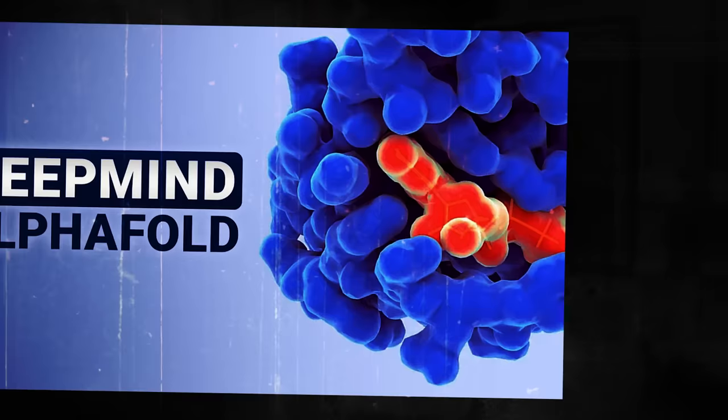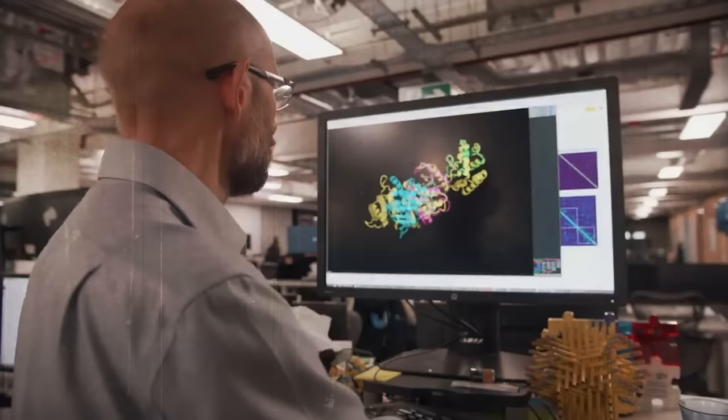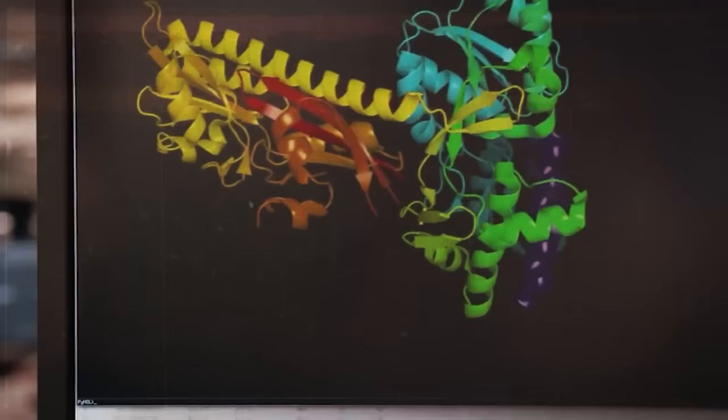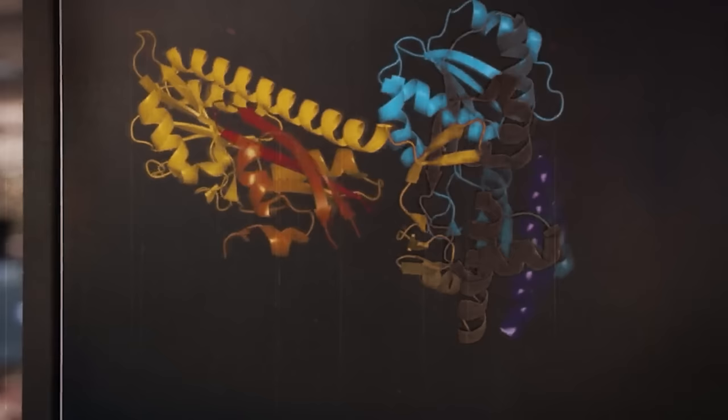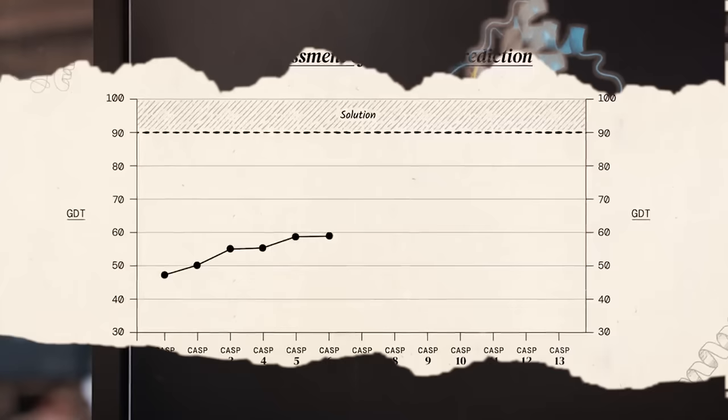AlphaFold is an AI system that can predict the structure of proteins with unprecedented accuracy. AlphaFold used a technique called deep learning, which is a way of teaching an AI to learn from data using multiple layers of artificial neurons. It also used a technique called attention mechanisms, which is a way of focusing on the most relevant parts of the data. AlphaFold learned from thousands of known protein structures and then predicted the unknown ones.